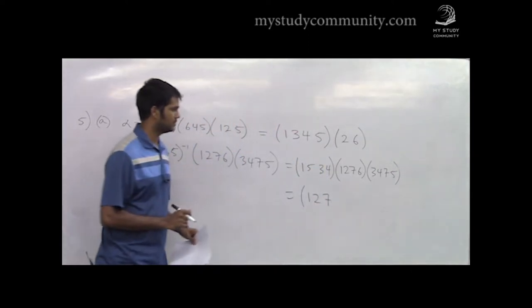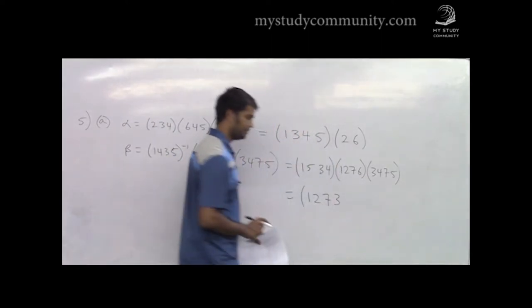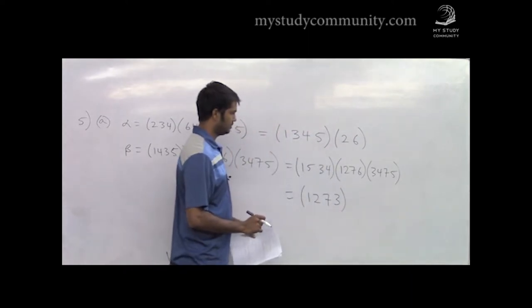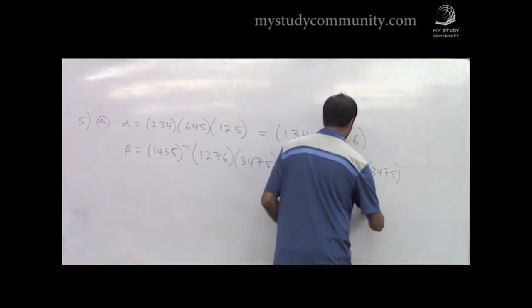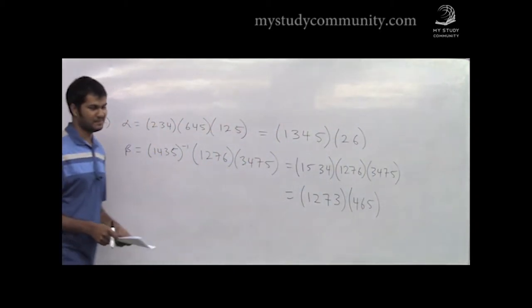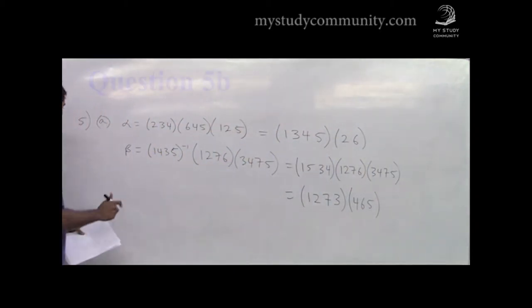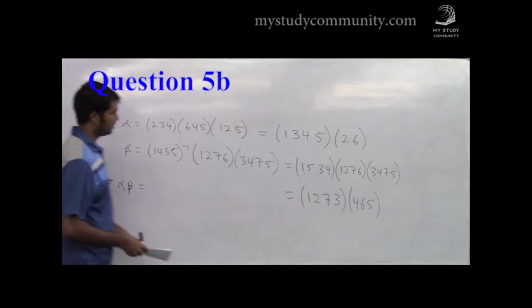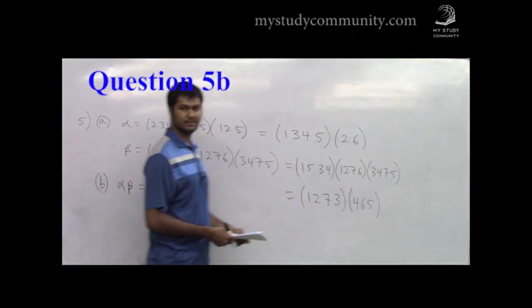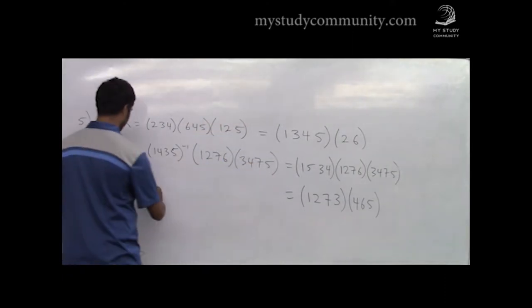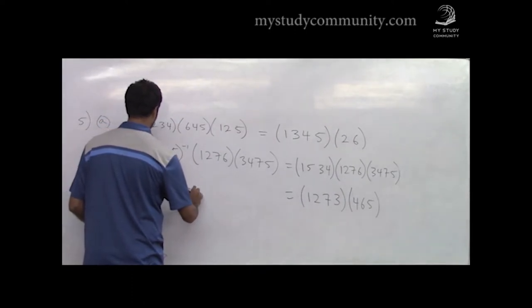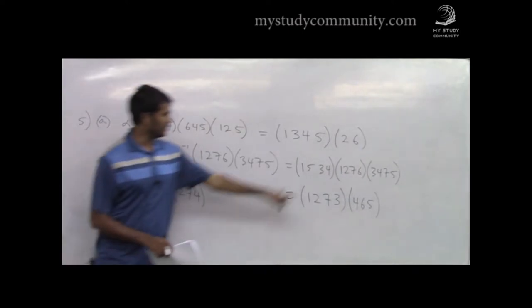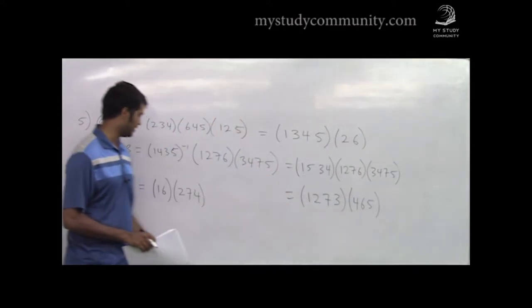Continuing through the mapping for beta: seven maps to its image; three maps to its image, and so on. Once we have alpha and beta, we compute alpha·beta by writing this product and then looking at what the composition does to each of the numbers 1, 2, 3, 4, 5, 6, to get alpha·beta as a product of disjoint cycles.